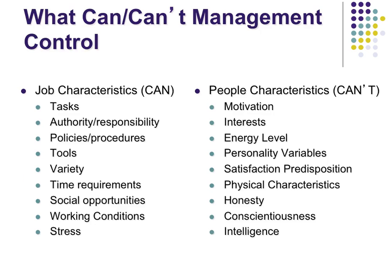What can managers control? They can control tasks, the authority and responsibility given to people, tools and resources available, stress levels, and working conditions. What they can't control includes individual motivation levels, individual interests, physical characteristics, and personality traits like conscientiousness, honesty, or intelligence. It's really important to know what you can and cannot affect as management or HR.